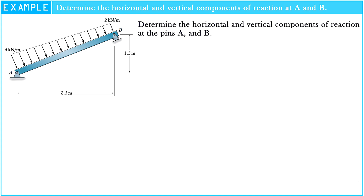Look at the figure of the problem. We see that there is a beam which has a slope from support B to support A. There are many given values as we see in the figure. In order to determine the reactions at A and B, first of all, we need to compute the length of the beam.